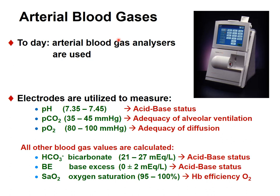Today, arterial blood gas analysis is completely different. We can directly measure pH, hydrogen ion concentration, CO2 concentration, and oxygen concentration. This allows direct evaluation of acid-base status, adequacy of alveolar ventilation, lung pump function, and diffusion by measuring PO2. Other parameters — bicarbonate, base excess, and oxygen saturation — are calculated from the measured data.